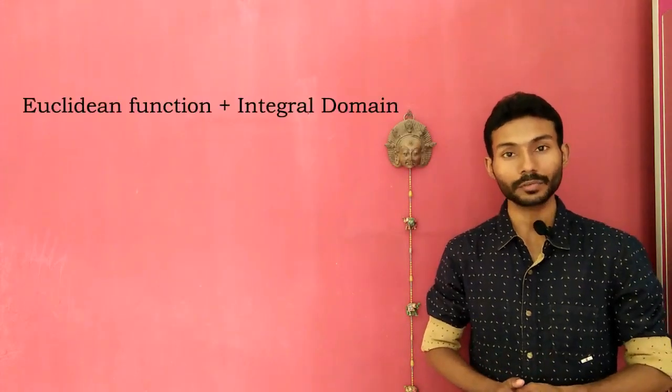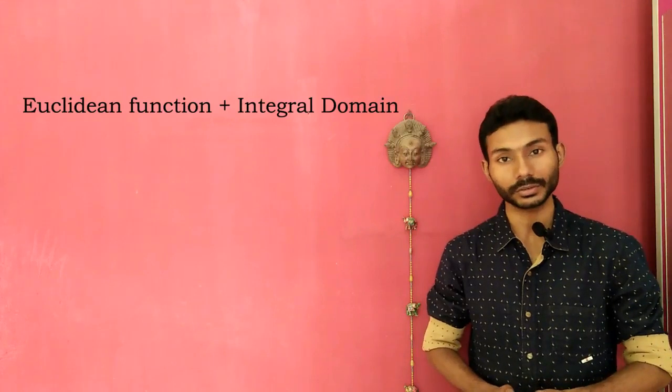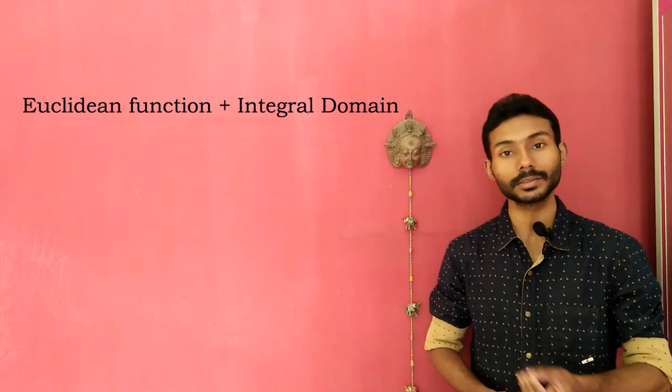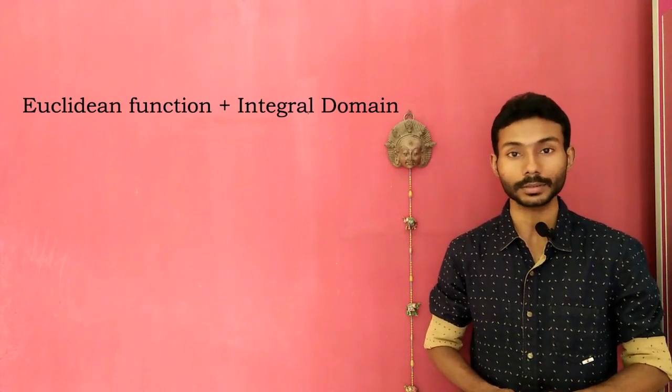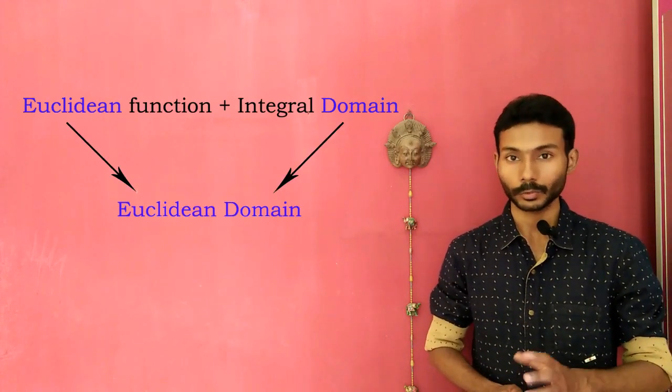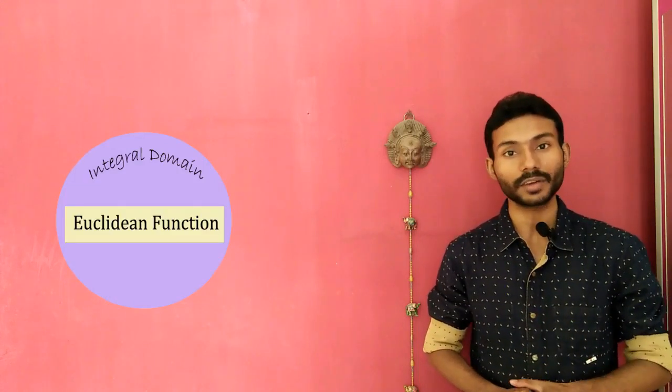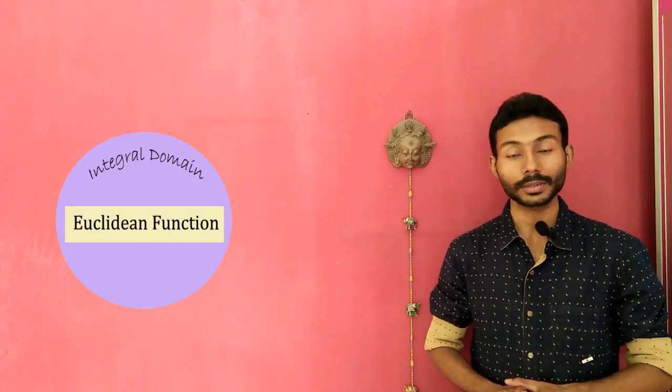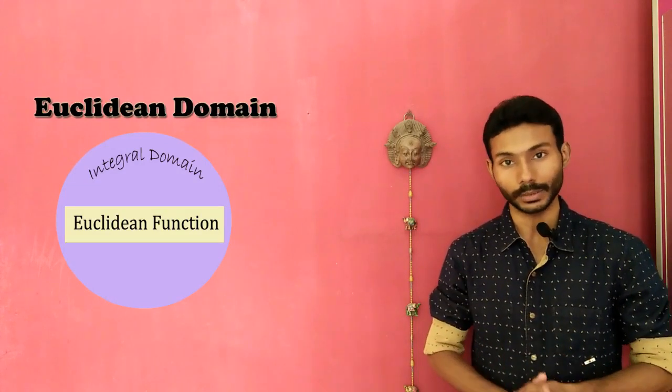A combination of a Euclidean function and an integral domain is called a Euclidean domain. Basically, an integral domain which has at least one Euclidean function is called a Euclidean domain.